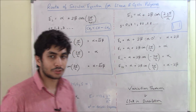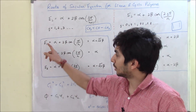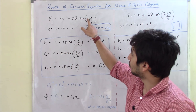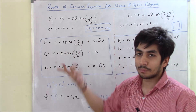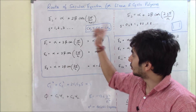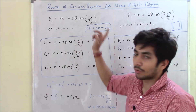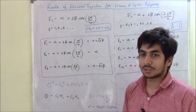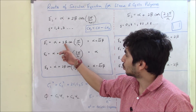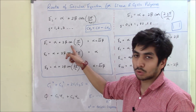Let's use the formula to find the roots. We take E1 first, with j = 1. So E1 = alpha + 2 beta · cos(j·π / (n+1)). Since n = 3, n+1 = 4, so this becomes cos(π/4). Cos 45° = 1/√2, so 2 × (1/√2) = √2, giving E1 = alpha + √2·beta.